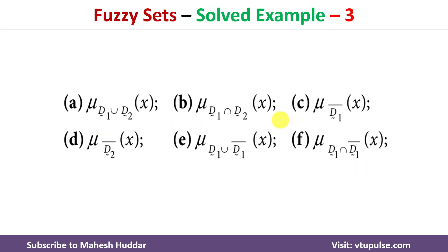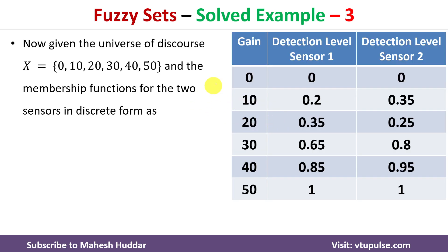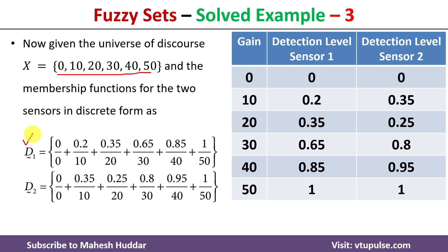First, we will convert the given data into the form of fuzzy sets. If you notice the gain settings, there are six possibilities: 10, 20, 30, 40, 50, and 0. We will consider these as the members of the fuzzy set, and the detection level as the membership value. D1 is a fuzzy set where 0 is an element with detection level 0. For D2, 0 is again an element with detection level 0, and 10 is the element with detection level 0.35, and so on for the remaining values.